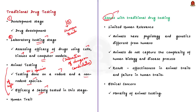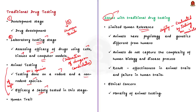Traditional drug testing has inherent issues. The first major issue is limited human relevance: animals used in testing often have physiological and genetic differences from humans. Animal models do not fully capture the complexity of human biology and disease processes. This mismatch can result in drugs that appear safe and effective in animal studies but fail in human clinical trials. The second major issue is the ethical concern — drug testing on animals may cause harm or distress to them.